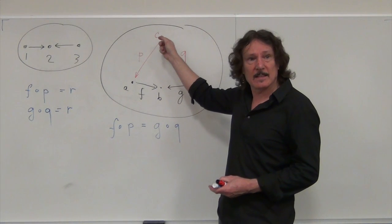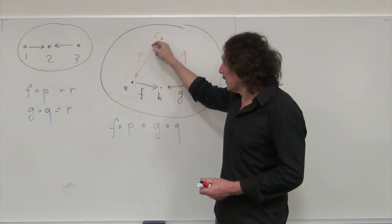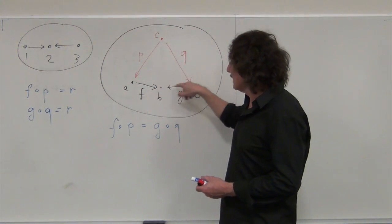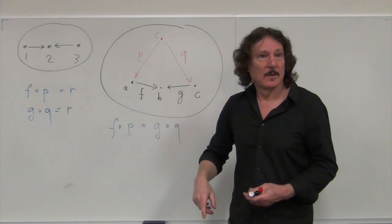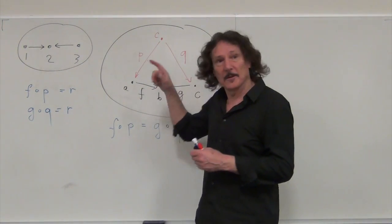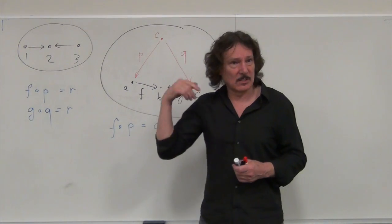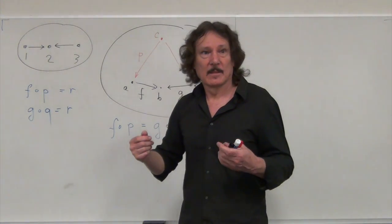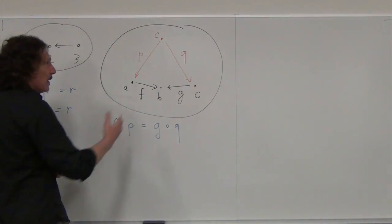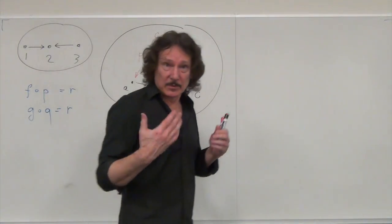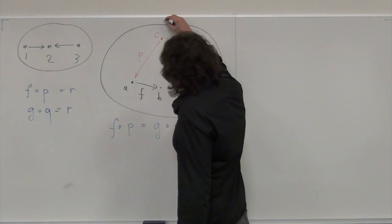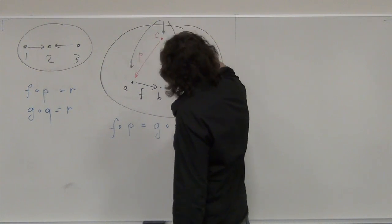The pullback is a set of pairs where the first element, when projected with F, is equal to the second element projected with G. So F on the first element is the same as G acting on the second element. That's what the pullback is. And of course we pick the best of these — the universal construction — meaning any other candidate factorizes uniquely through this.